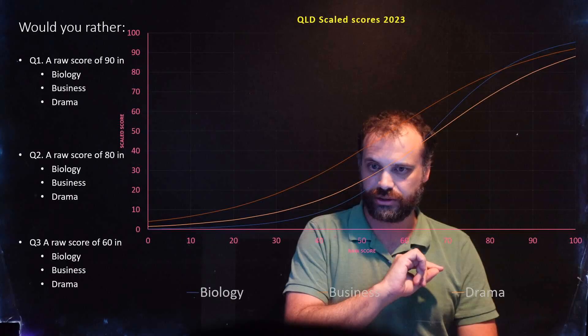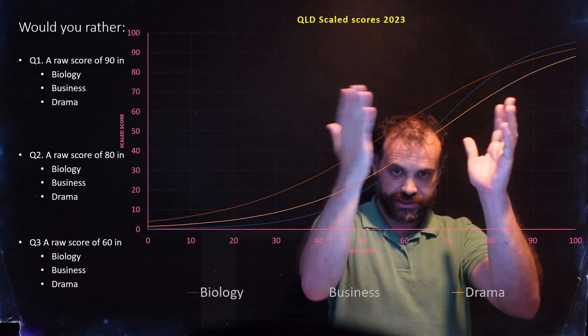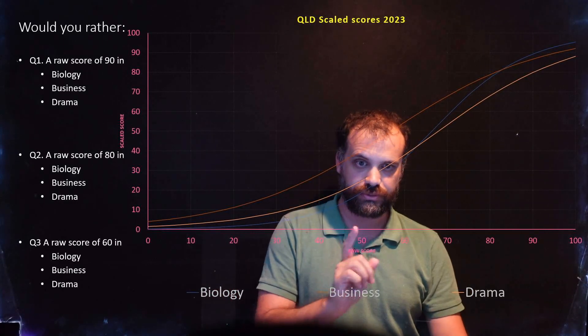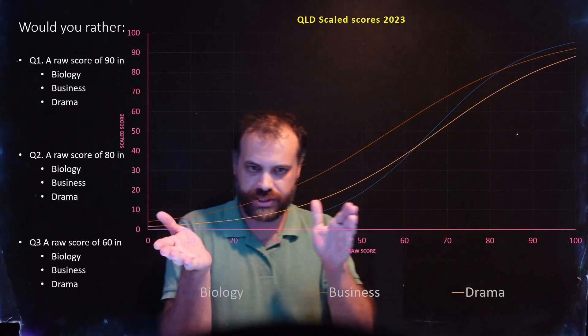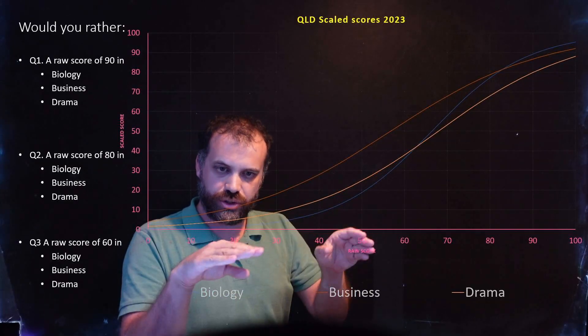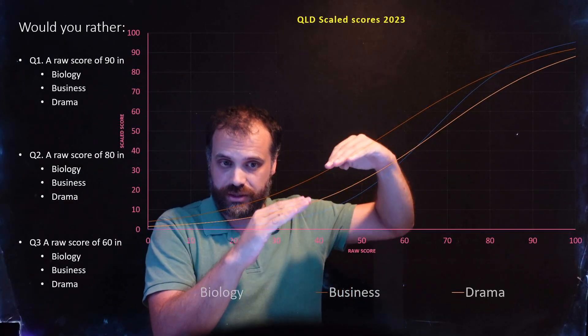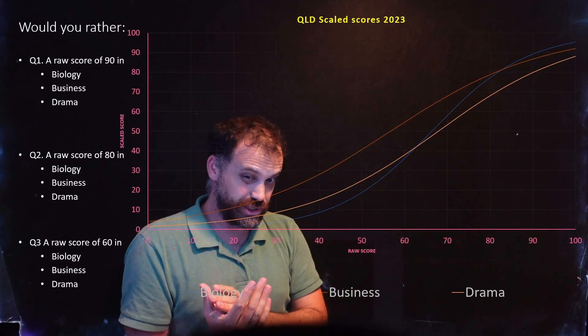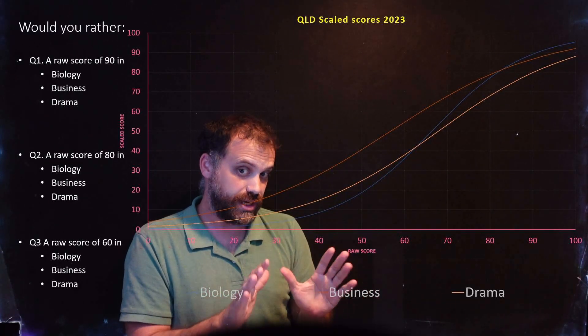Let's take a look. This is our set of scaling graphs for our three subjects - biology, business, and drama. And what I hope you're seeing here is that these curves don't just sit above each other, below each other. They pass through each other and intersect each other.